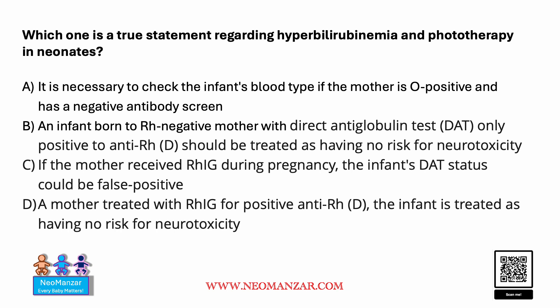Option D: an infant whose mother was treated with RH Ig for a positive anti-D in early pregnancy should be considered as having no risk for neurotoxicity. No, this is wrong because the mother had a positive anti-D status before the Rhogam was given, so this baby is high risk for neurotoxicity.